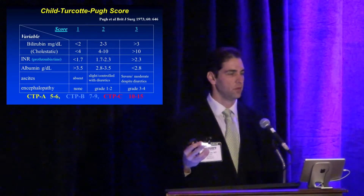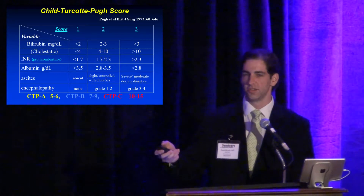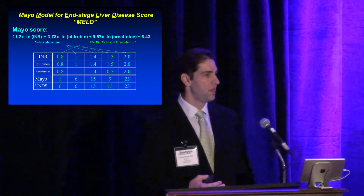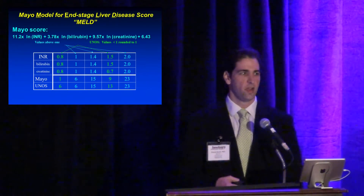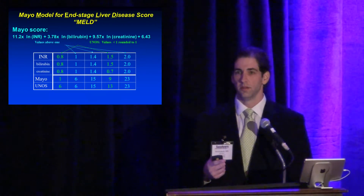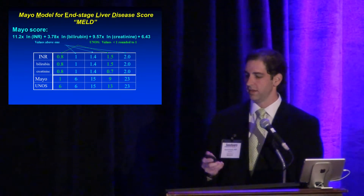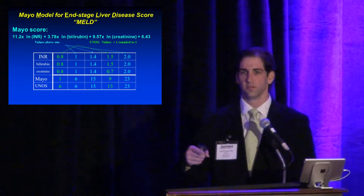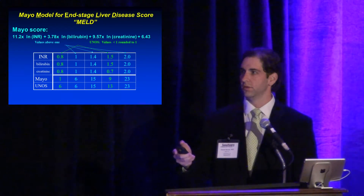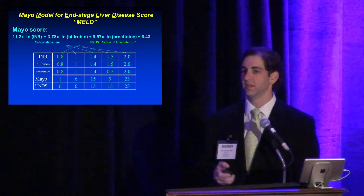The Child-Turcotte-Pugh score uses five variables — three laboratory tests and two physical findings of ascites and encephalopathy — ranging from five to fifteen, broken into Child's class A, B, and C. The MELD score, the Model for End-Stage Liver Disease, takes the log transformation of INR, bilirubin, and creatinine. Initially derived to predict outcomes after TIPS, it is now used to allocate patients for transplant. The UNOS derivation differs slightly from the Mayo formula — if any value is less than one, the UNOS model gives a higher result.